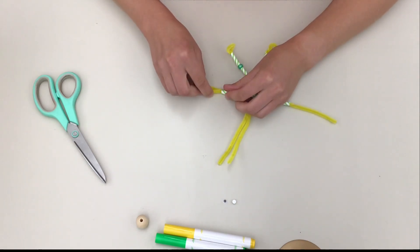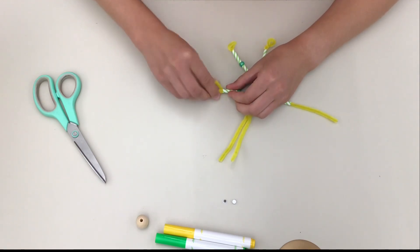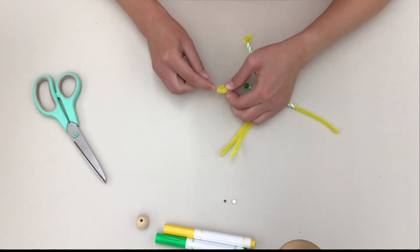Do the same thing to form the hands, but instead of leaving it as one loop, form it into a mitten shape, with one big loop and a little loop.